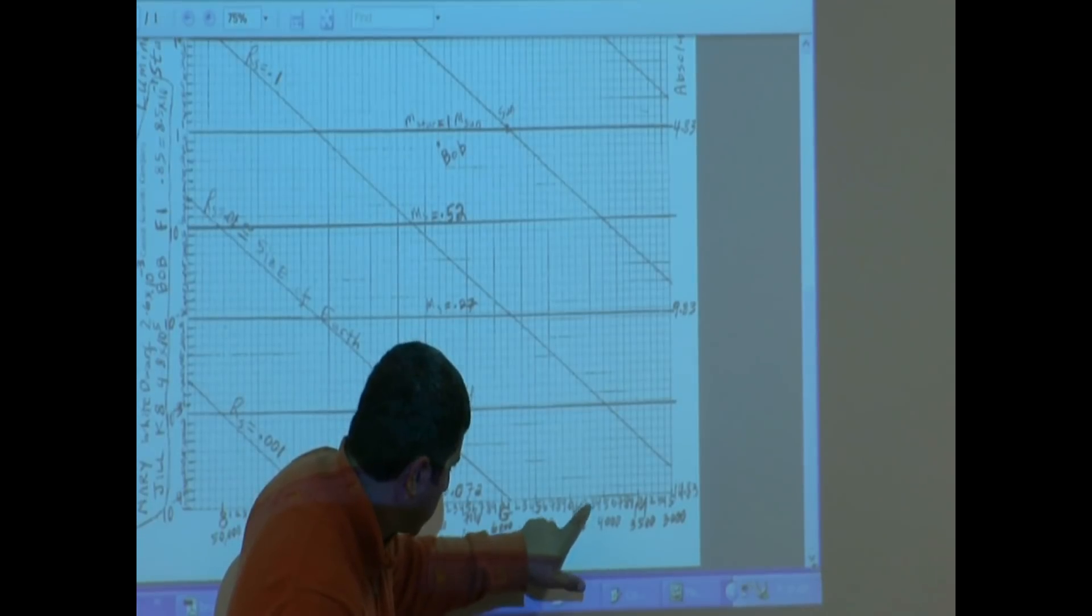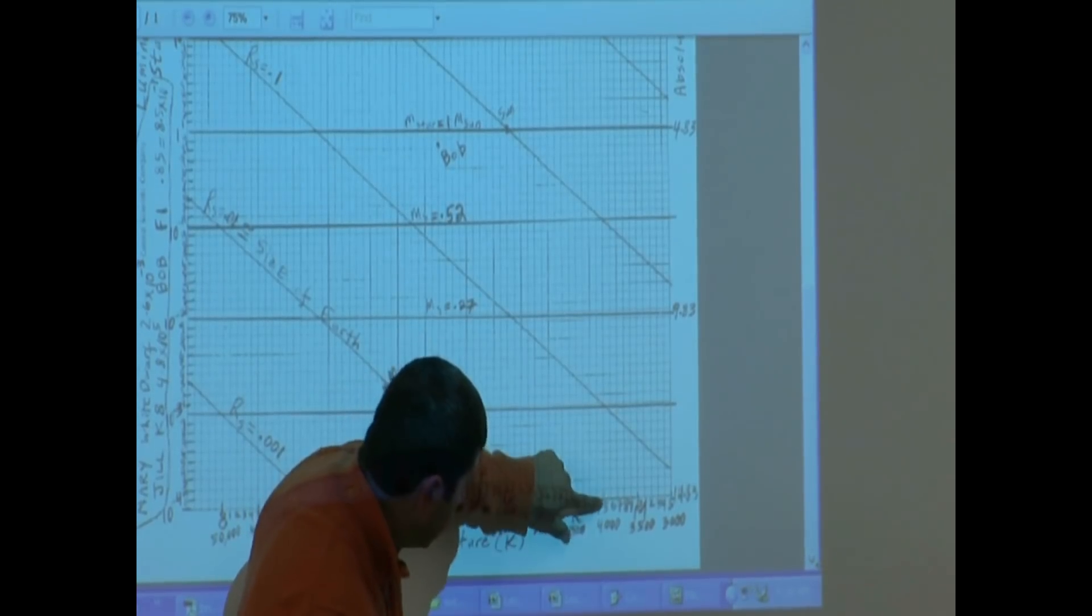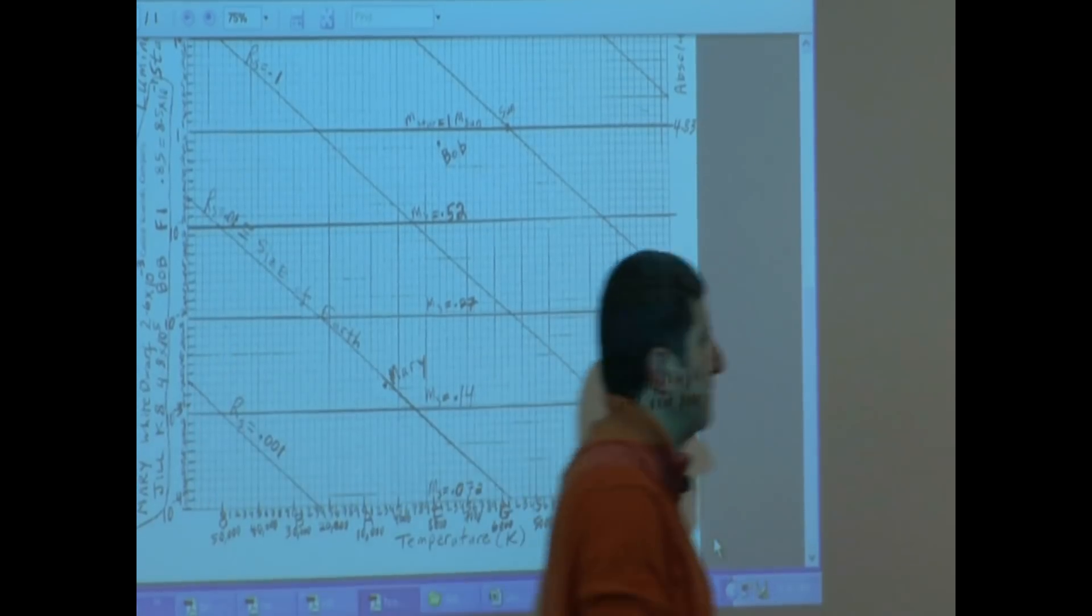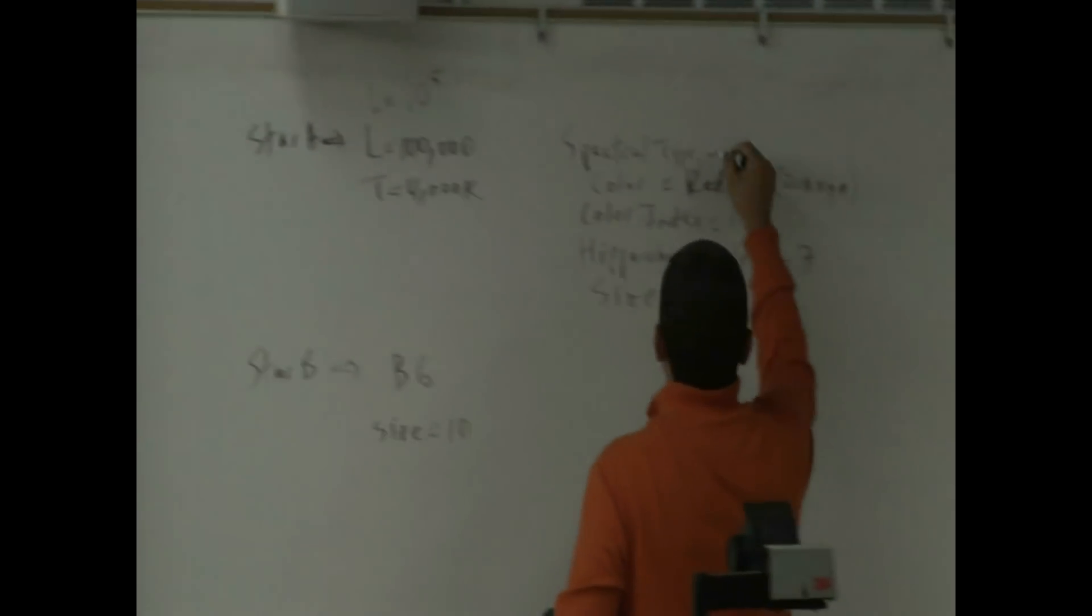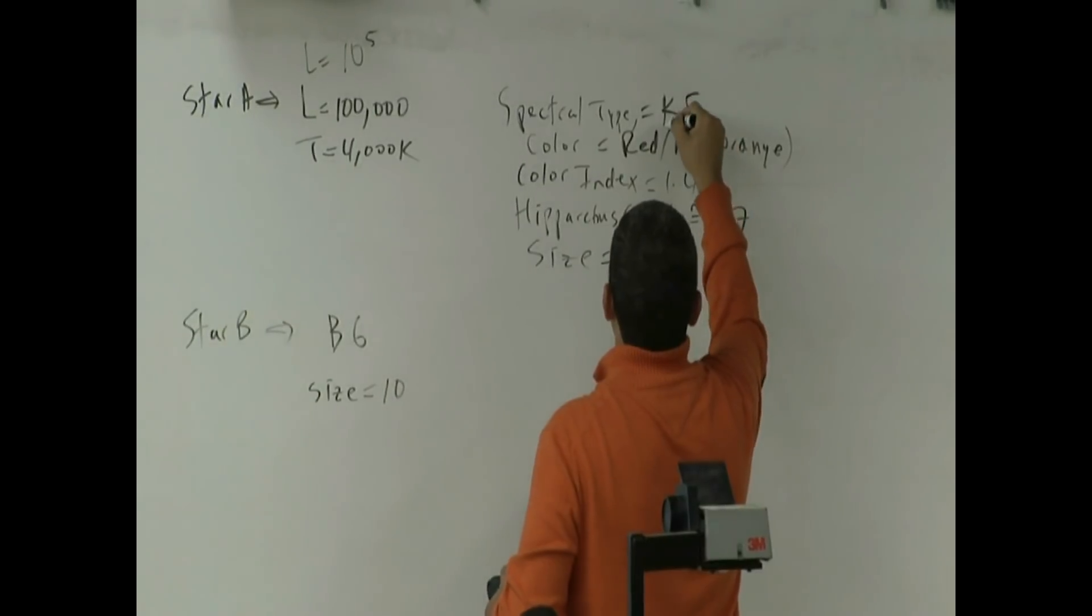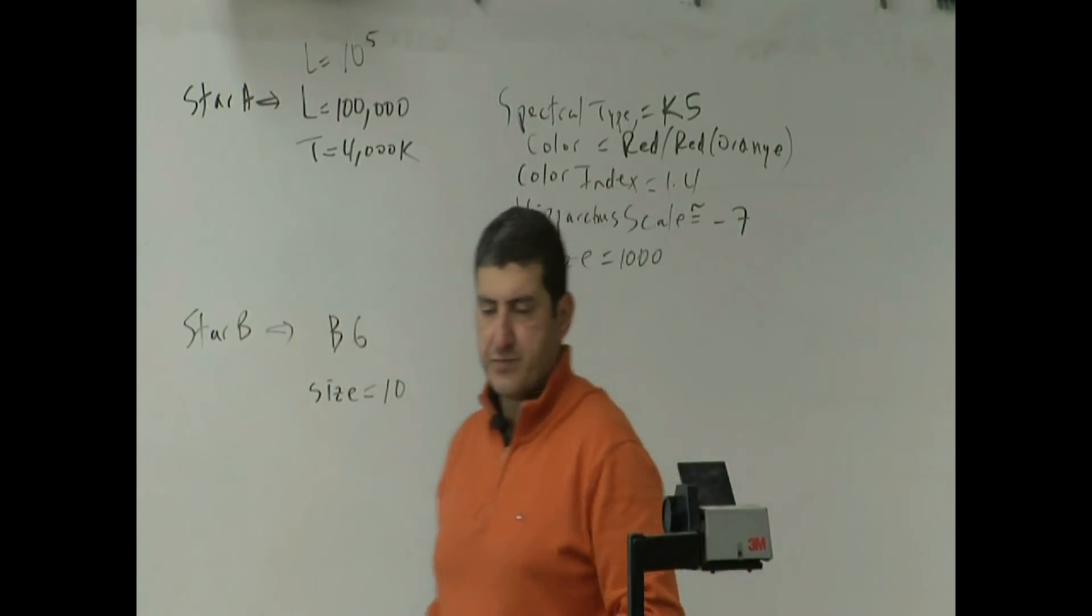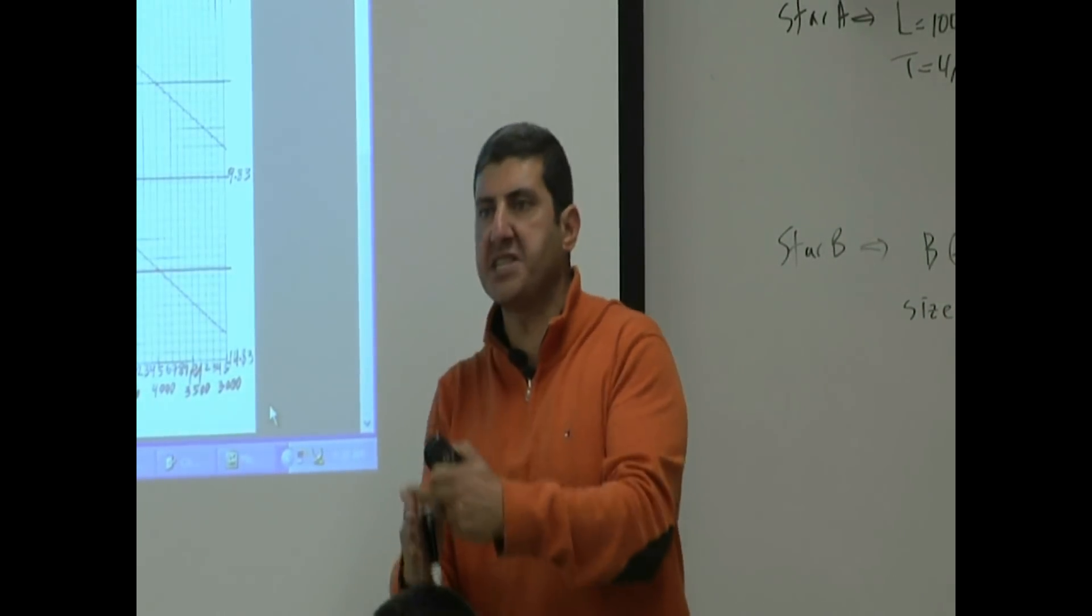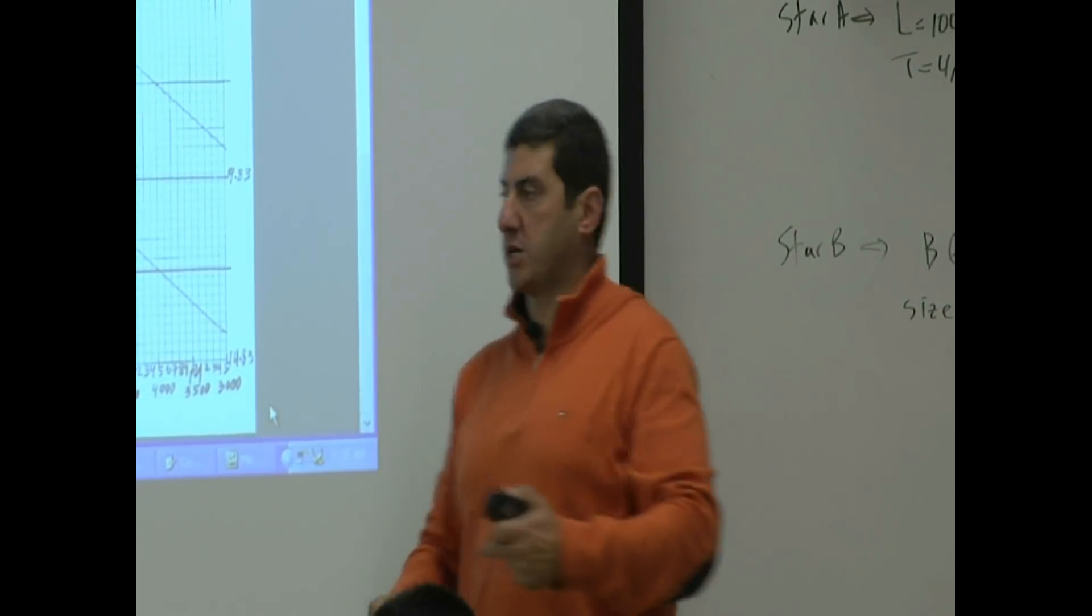K5. K0, K1, K2, K3, K4, K5. That's 4,000 Kelvin. So it's spectral type K5. We're able to practice that just by giving you two pieces of information about that star.